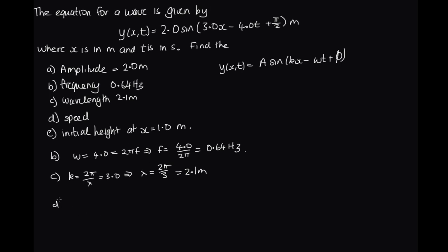The speed, d. We've got v = fλ. So we could just multiply together our f and our λ here, or we could use the other equation that v = ω/k. And we know that ω is 4 and k is 3. So this is 4/3. And so that is equal to 1.3 meters per second.